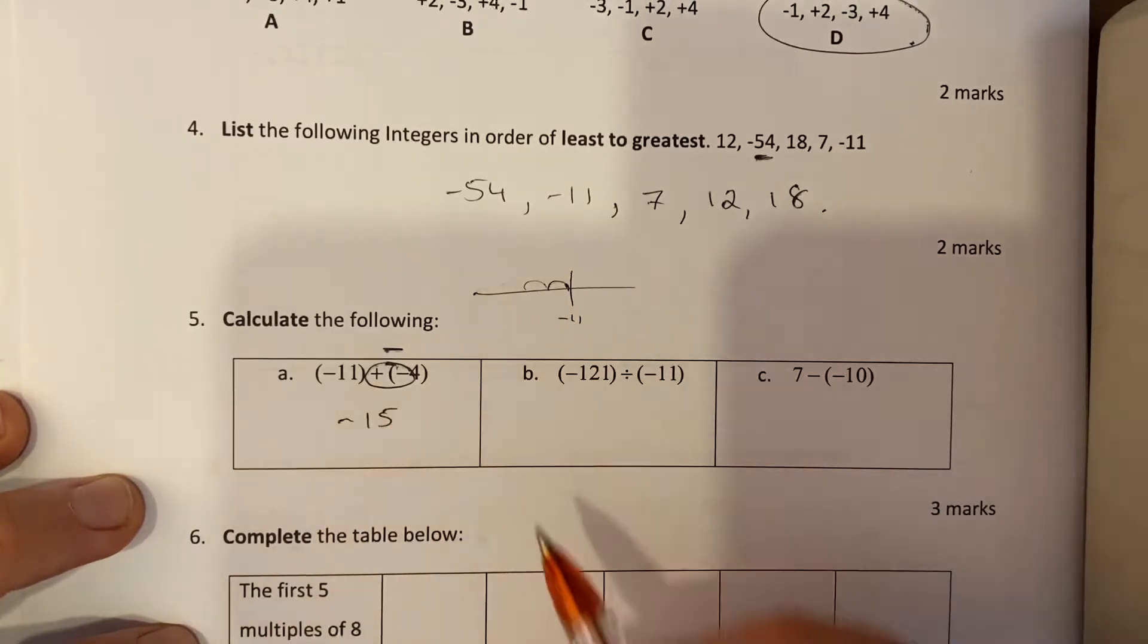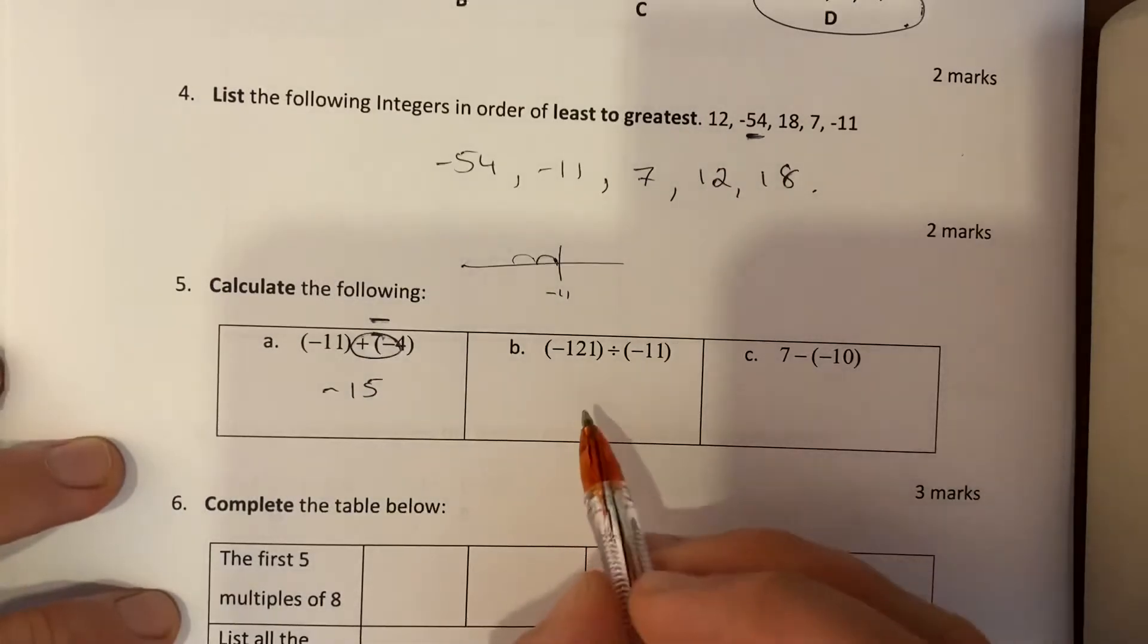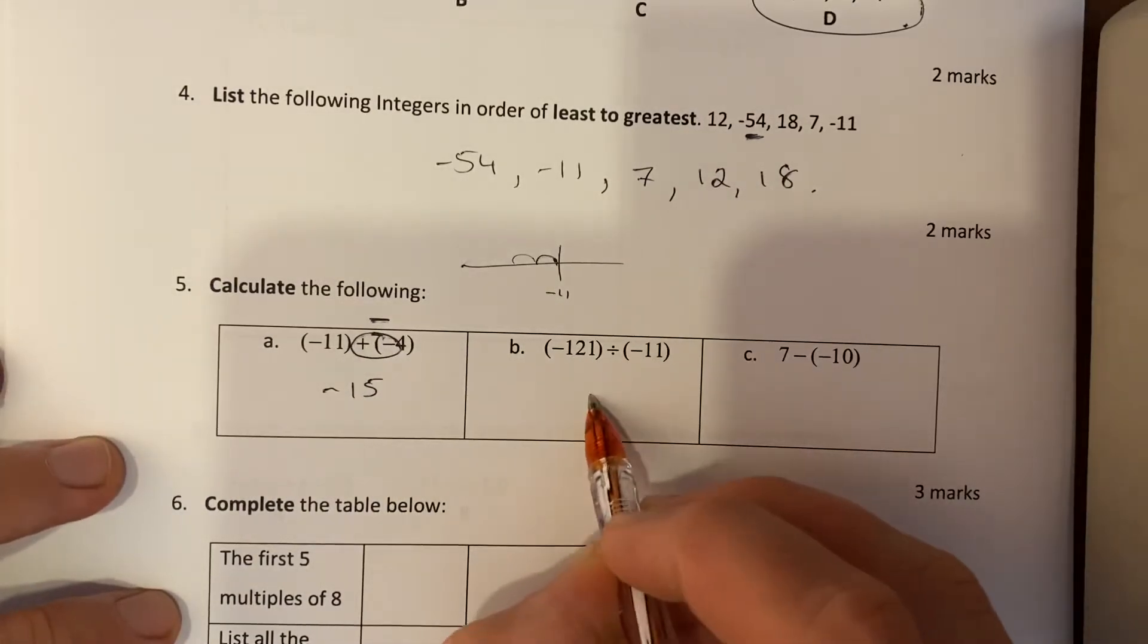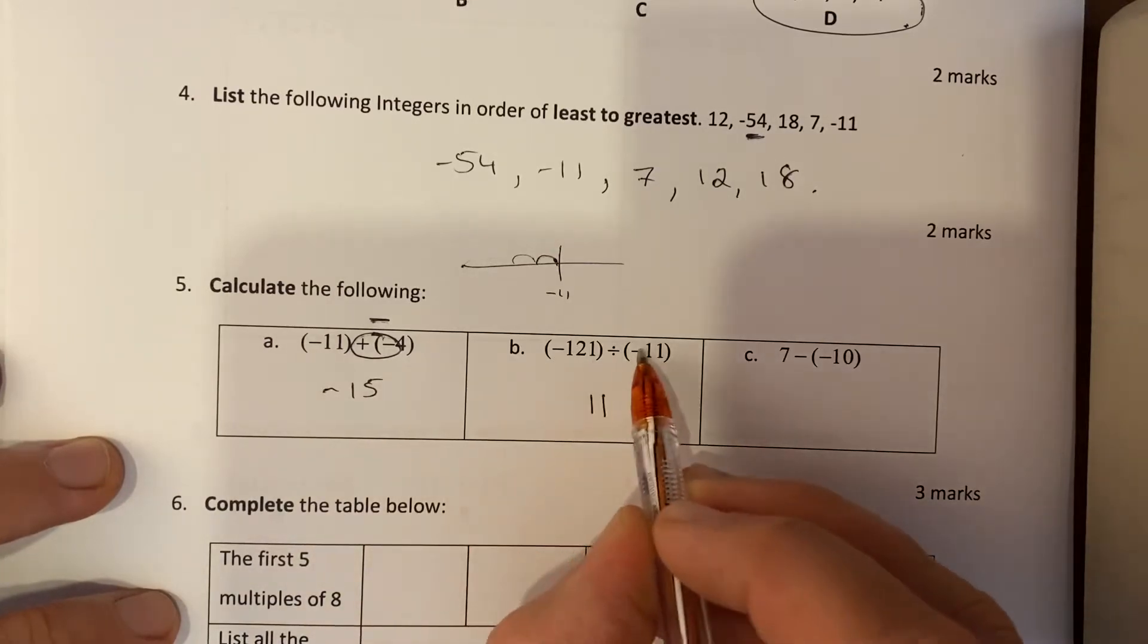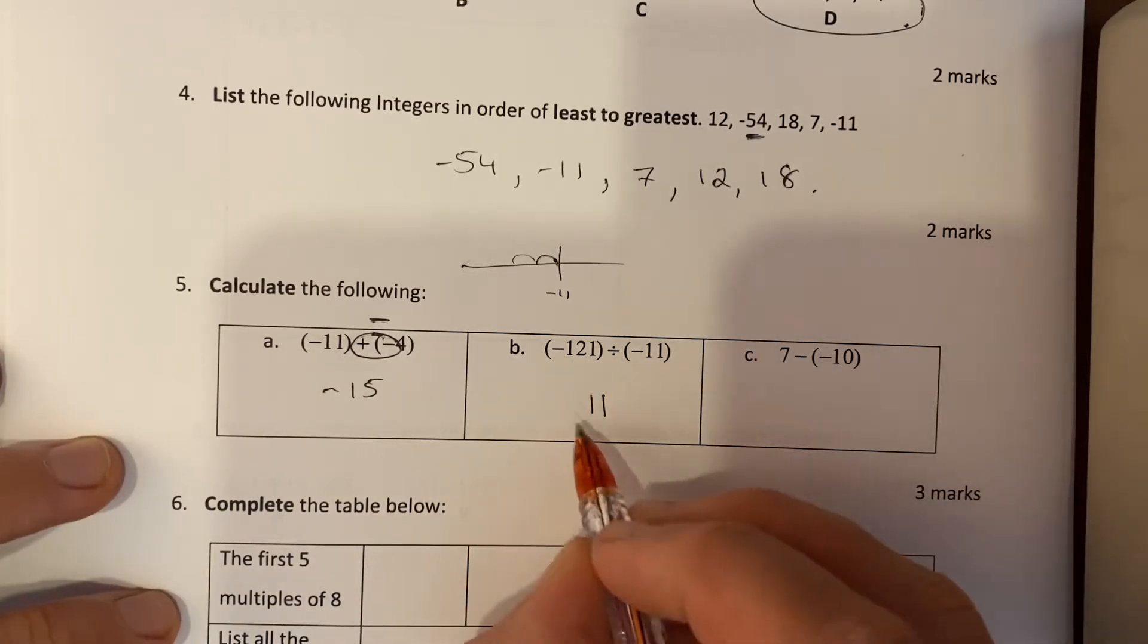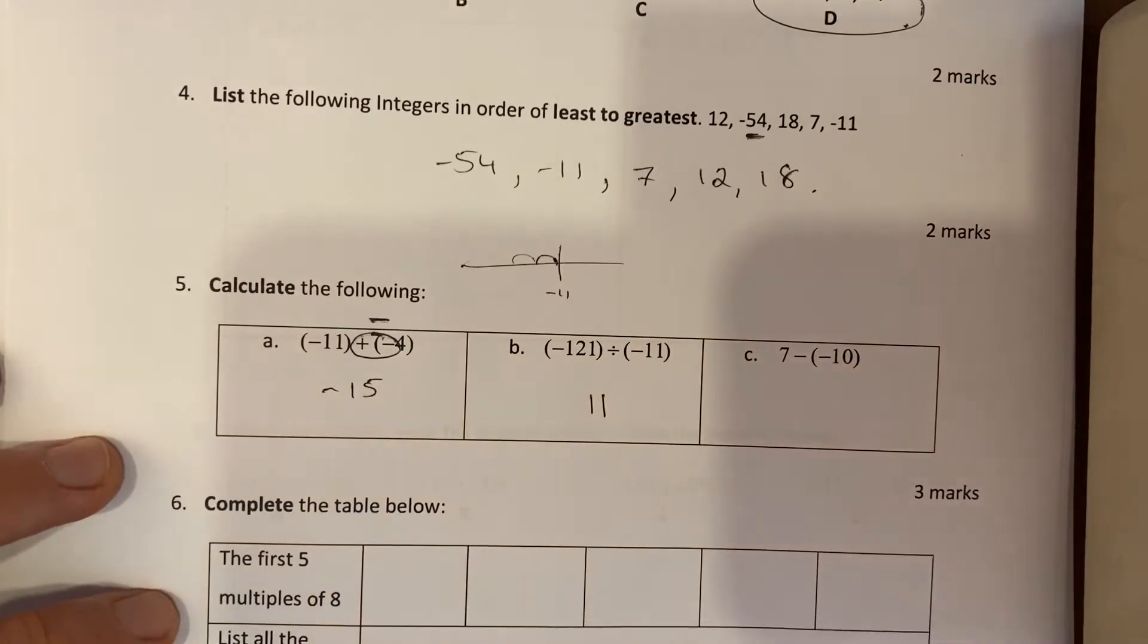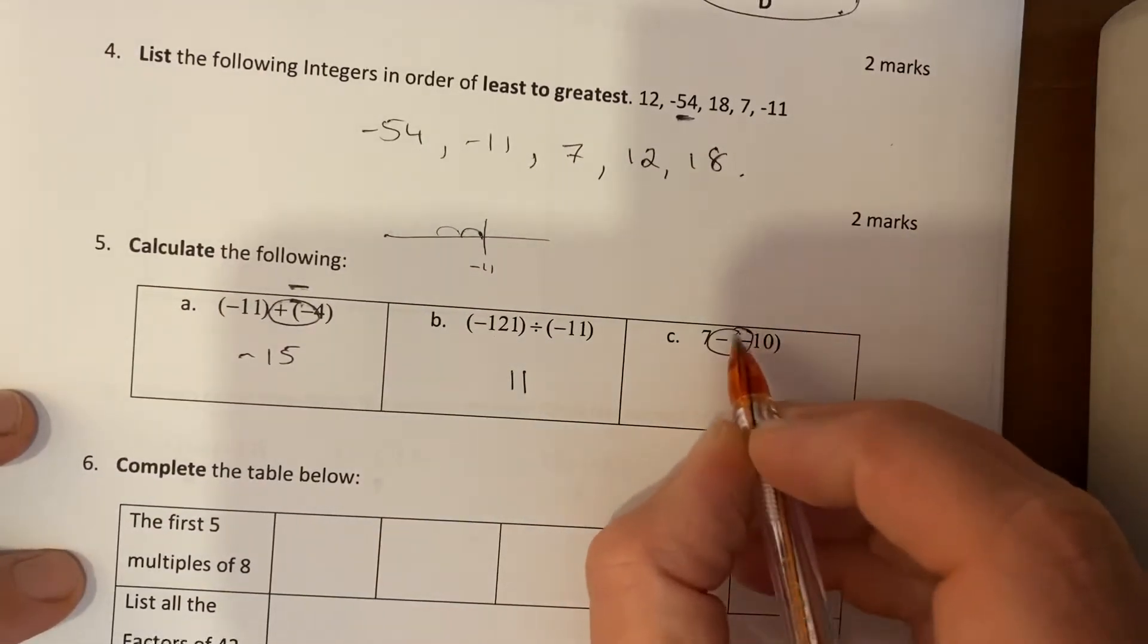Dividing: well, 121 divided by 11 is 11 from our times tables. Minus divided by a minus - that double negative makes it a positive, so I just leave it as positive 11. And minus minus here in a row becomes a plus, so 7 plus 10 is 17.